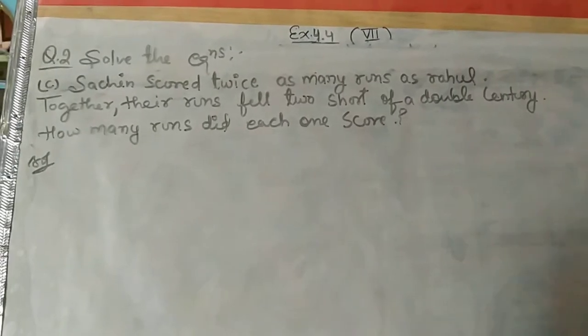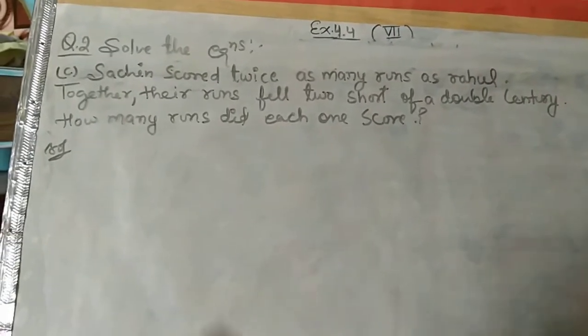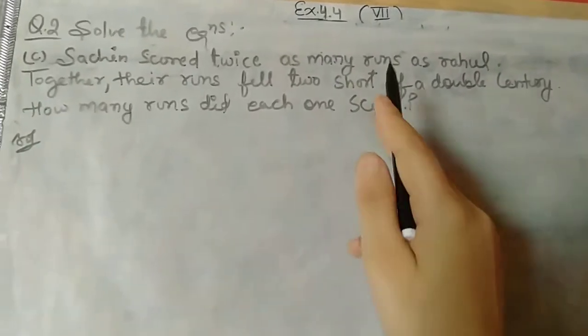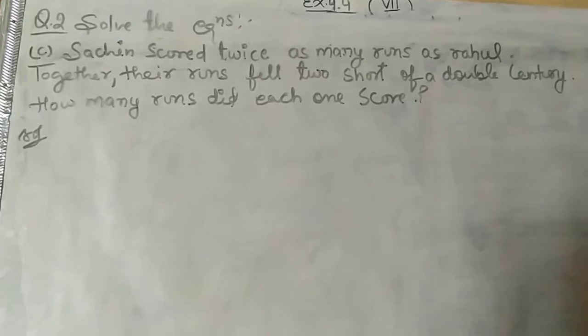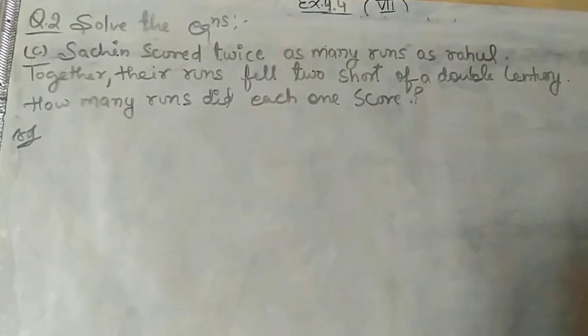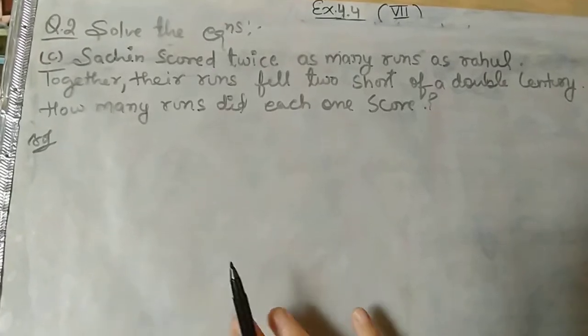Hello everyone, welcome to my channel NCERT Learning Hub. Here we are going to solve part C of question number two from exercise 4.4. The question is: Sachin scored twice as many runs as Rahul.